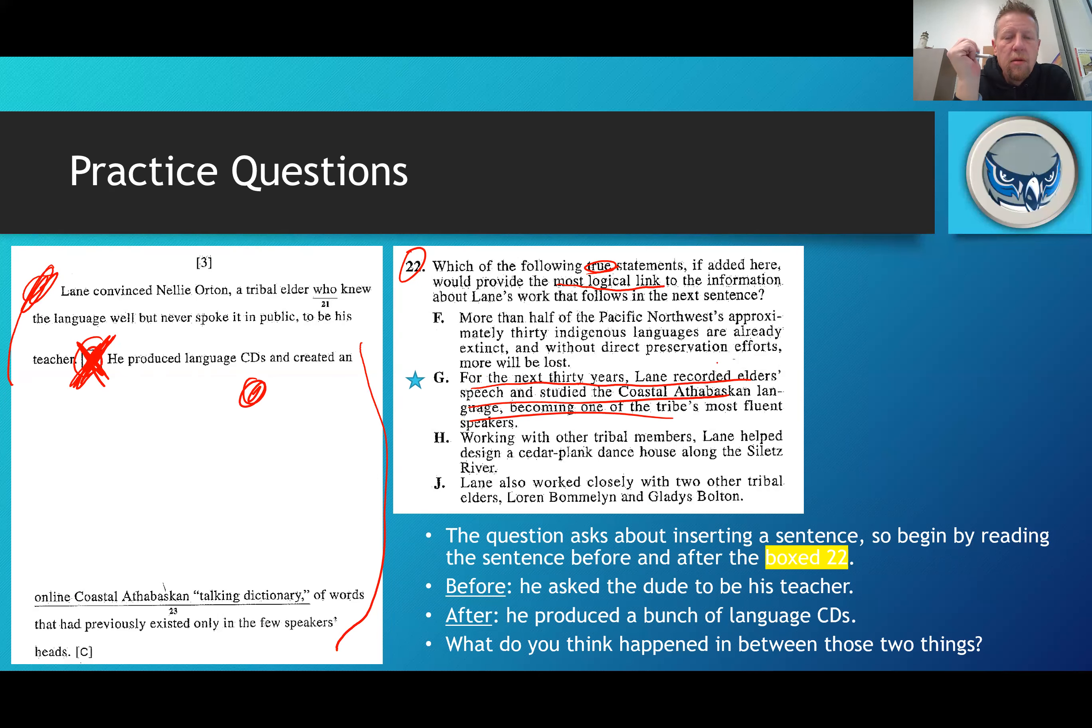That is a logical transition between he found someone to teach him and then he produced a bunch of language CDs. For the next 30 years he learned the language. That's a logical transition. But let's take a look at F, H, and J. More than half of the Pacific Northwest's approximately 30 indigenous languages are already extinct. That might be a true statement but it doesn't really connect what Lane did before and what Lane did after. We have to find the sentence that talks about what Lane did in between. G does that, F does not. Neither does H. Working with other tribal members, Lane helped to design a cedar plank dance house along the Siletz River. Nothing to do with the dance house.